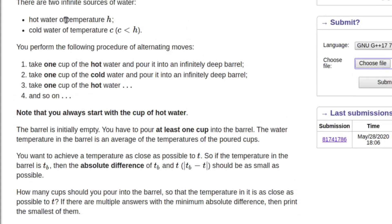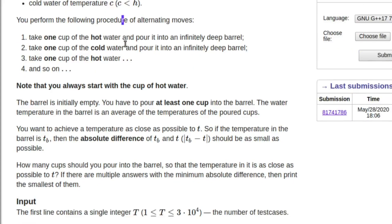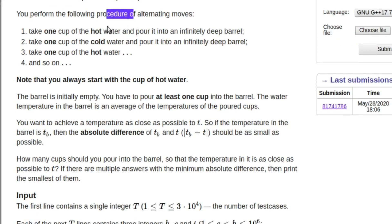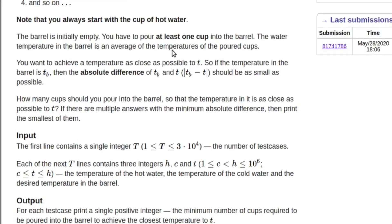One source of water has temperature H (hot) and the cold water source has temperature C, where C is less than H. You have to perform the following procedure: in the first turn take one cup of hot water and pour it into a deep barrel that is also infinitely large, then do the same for cold water, then again hot, then again cold. Initially the barrel is empty and you have to pour at least one cup.